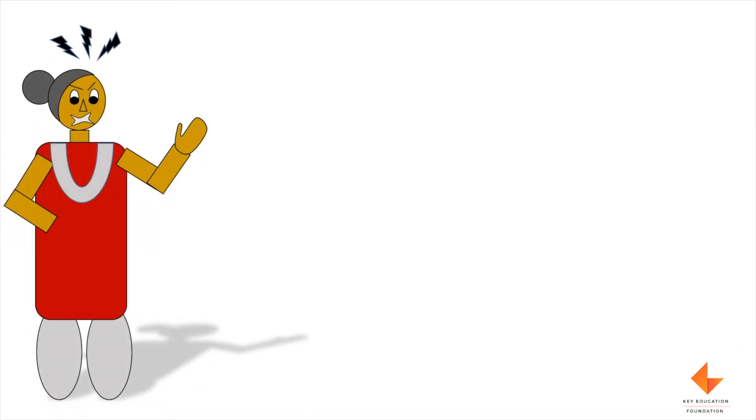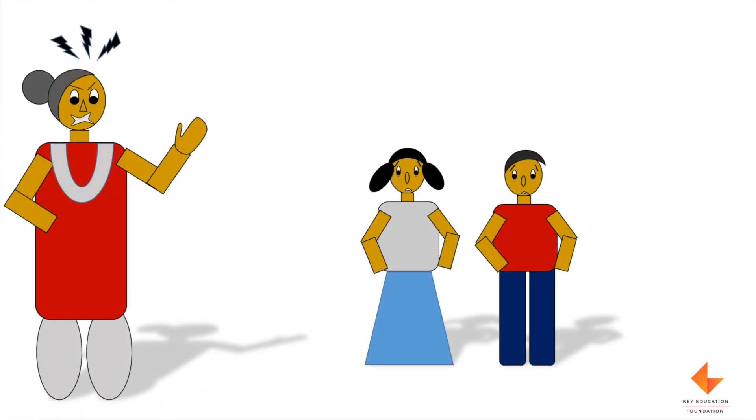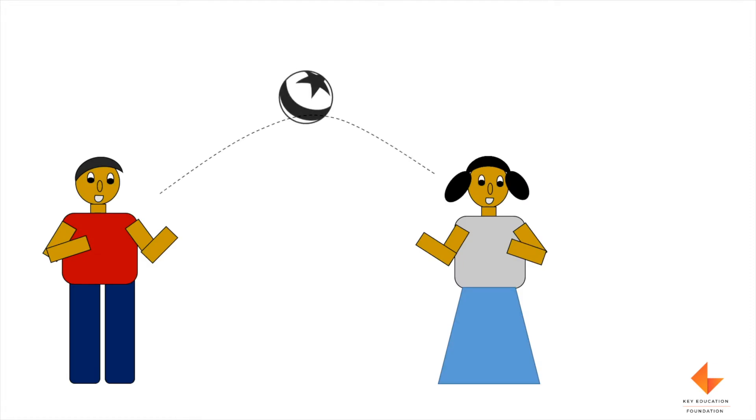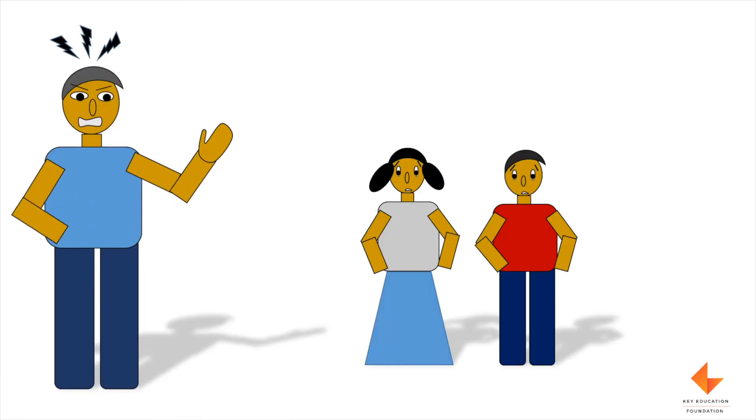The mummy gets angry and scolds the children or hits them. Or while playing, children forget to do their homework and Papa also gets angry and he also either scolds the children or hits them in his anger.